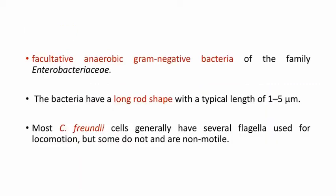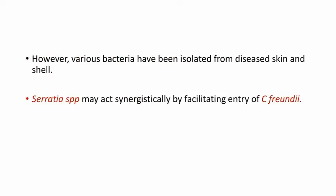It is a facultative anaerobic gram-negative bacteria of the family Enterobacteriaceae, having a rod shape with a typical length of 1 to 5 micrometers. These cells generally have several flagella, but some are non-motile. Various bacteria have been isolated from diseased skin and shell, and Serratia species may act synergistically by facilitating entry of Citrobacter freundii.